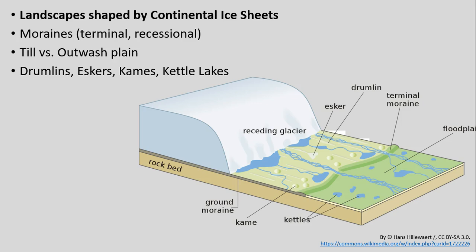We can think of glaciers like huge bulldozers — huge blocks of ice that can be hundreds of meters or hundreds of feet high — that come through landscapes and plow through, removing much of what was there prior. But as they recede, as shown in this diagram, they leave behind a whole set of geomorphic features marking the landscape. Things like moraines, till and outwash plains, and a series of others: drumlins, eskers, kames, and kettle lakes.